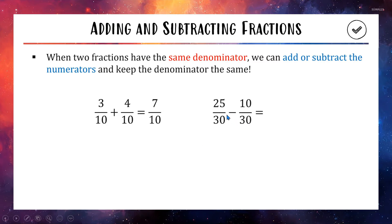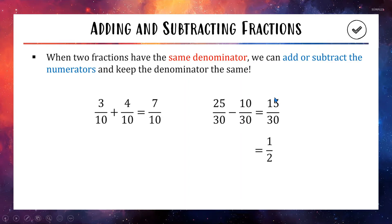For a subtraction example: 25 out of 30 take away 10 out of 30. The denominators match, so we keep the 30 and just subtract the tops. 25 take away 10 is 15, so we write 15 out of 30. As always, if you can simplify your answer it's a good idea to do so — 15 out of 30 simplifies to 1 out of 2, because the top is 1 fifteen and the bottom is 2 fifteens. That will get you full marks in a math test.